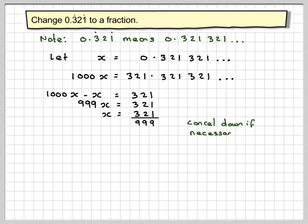Cancel down, if necessary. 3 goes into the top, so it becomes 107 over 333.